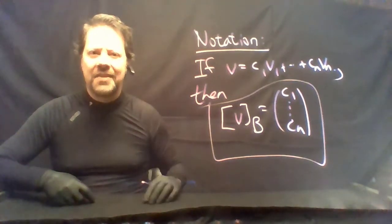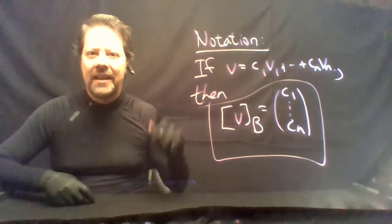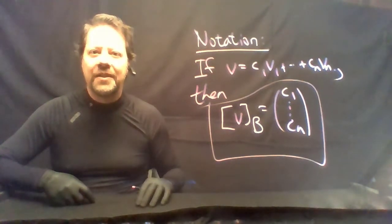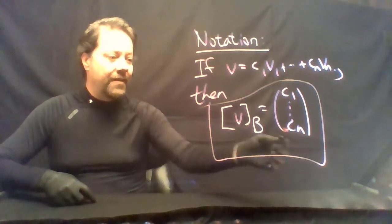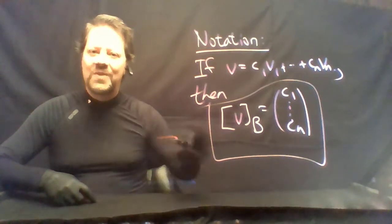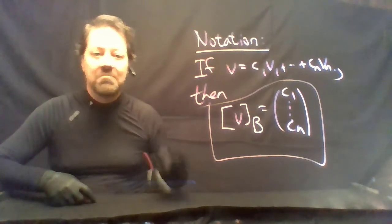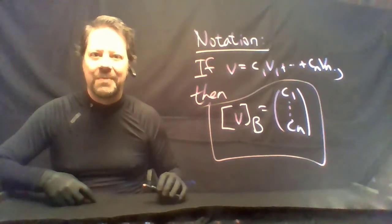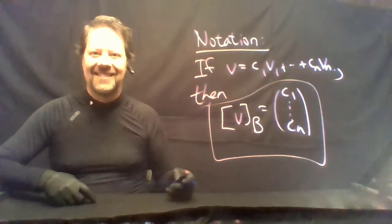This gives us an interesting possibility. Perhaps every finite-dimensional vector space can be thought of as Rⁿ. In other words, once we know everything about Rⁿ, perhaps we'll know everything about finite-dimensional vector spaces. Is there some grand unified mathematics where all we have to do is study this one theory and then generalize to everything? I don't know. Probably not. But it seems like an intriguing idea.